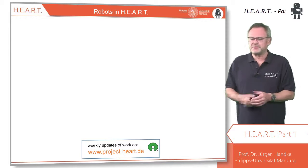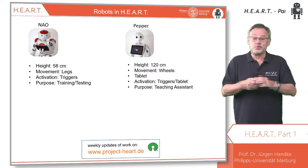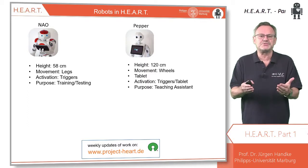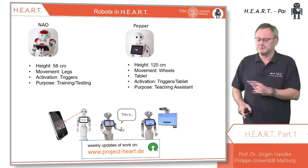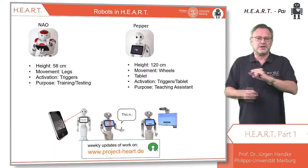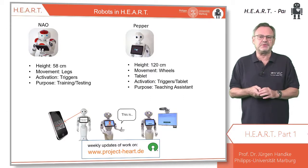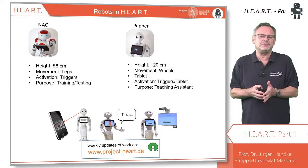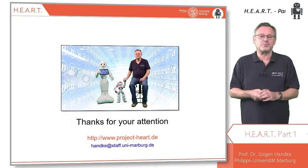Using our two robots, Nao and Pepper — who can both see, listen, move, speak, detect objects, and show emotions — we will test and develop robot apps, mainly for Pepper, in order to find out how humanoid robots can be employed beneficially in class. In a second video, I will show you how this goal can be achieved, what type of robot apps we have in mind, and how these apps work.